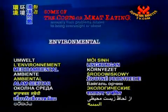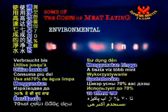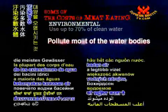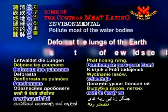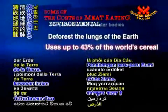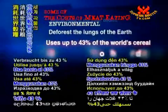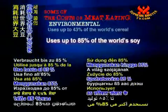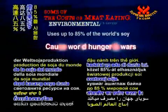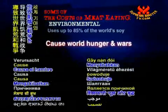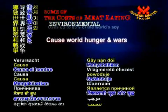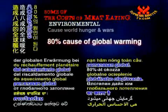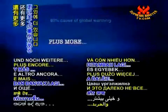Environmental costs: meat production uses up to 70% of clean water, pollutes most water bodies, deforests the lungs of the earth, uses up to 43% of the world's cereal and up to 85% of the world's soy, causes world hunger and wars, and is responsible for 80% of global warming — plus more.